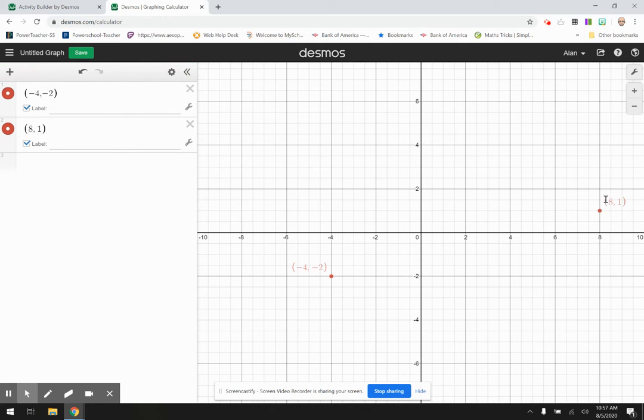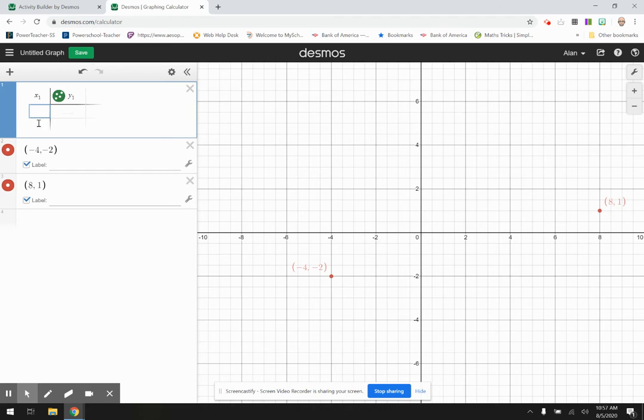Now to connect two dots, you have to put them in a table. You can hit the plus sign and hit the table, and that'll start a new table for you, and you can just enter both of your points in there. I can put negative four, put the right arrow, and put negative two.